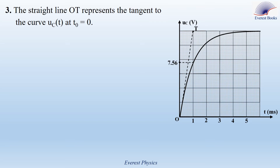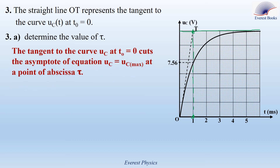Let's move to part 3. In this graph, we have the voltage across the capacitor as a function of time. The straight line OT represents the tangent to the curve UC at time 0. Question 3a: determine the value of tau. Looking at the graph, we have the asymptote whose equation is UC equals UC max. The tangent to the curve UC at time 0 cuts this asymptote at a point whose abscissa is tau. Therefore, tau equals 1 millisecond.